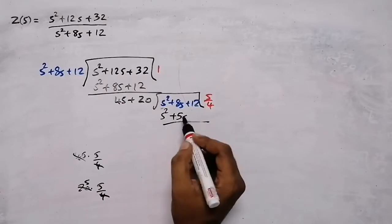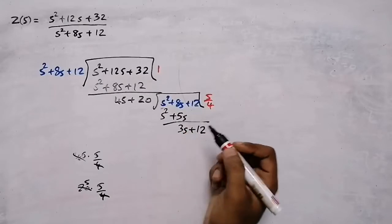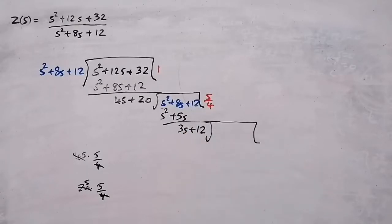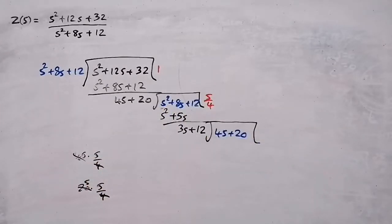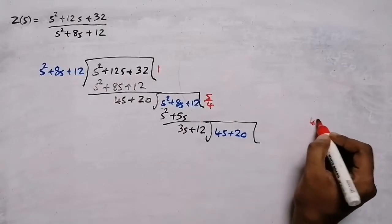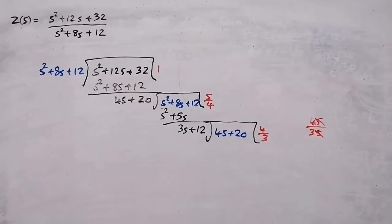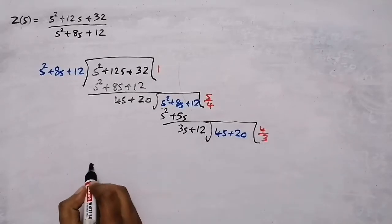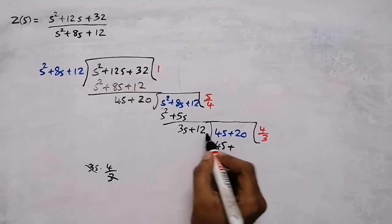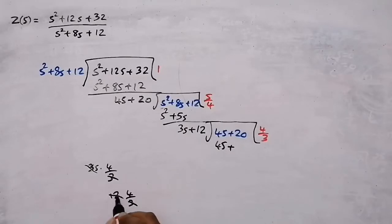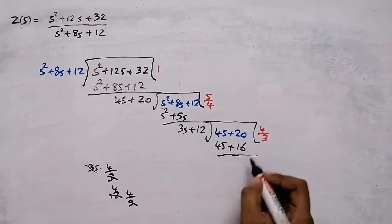Divide again. The new divisor is 4s + 20. First term: 4s divided by 3s gives 4/3. Multiplying: 3s × (4/3) = 4s, and 12 × (4/3) = 16. Subtracting: 4s − 4s = 0, 20 − 16 = 4. Remainder is 4.